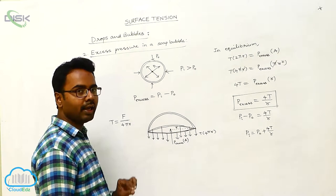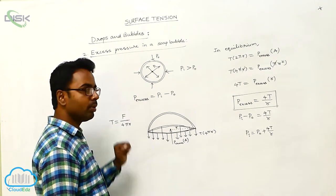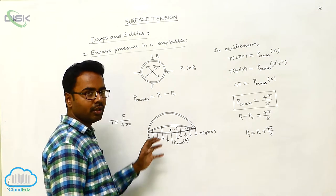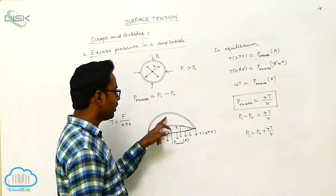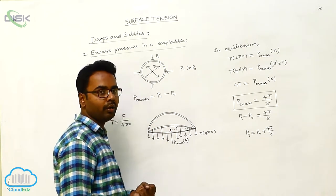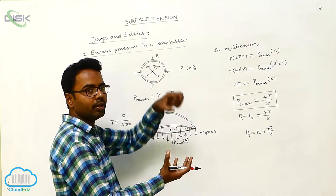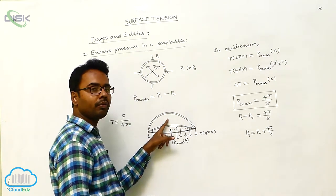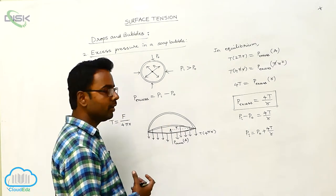Let us derive the formula for excess pressure in the soap bubble. We consider the upper half of the soap bubble, meaning a hemisphere of the soap bubble. The upper half of the soap bubble is being pulled down by the lower half, and the lower half is being pulled up by the upper half. We consider the upper half, which is being pulled down by the lower half.